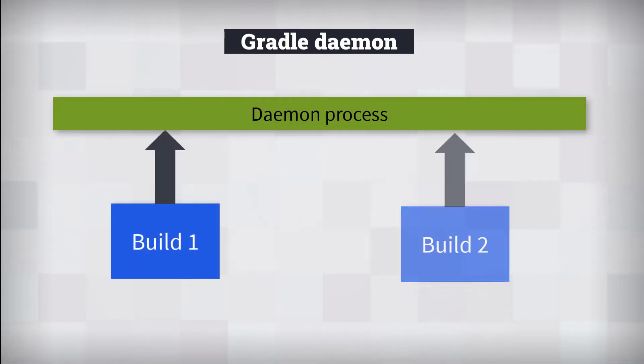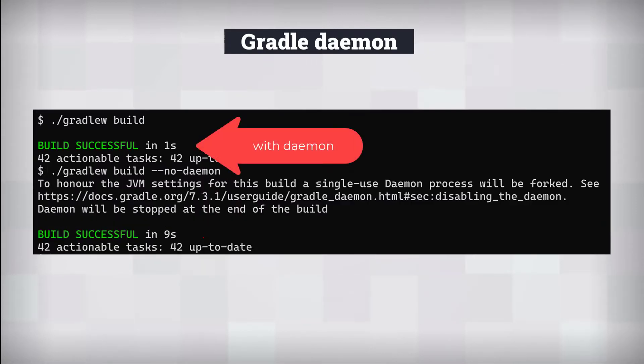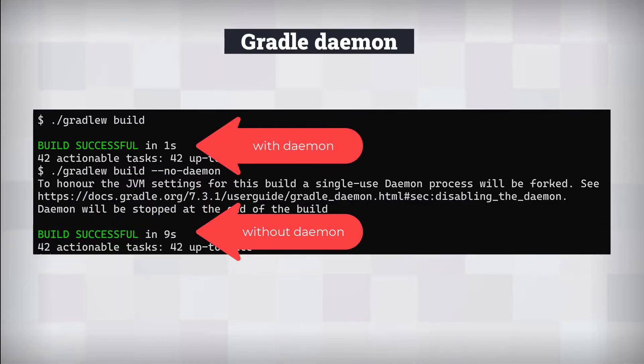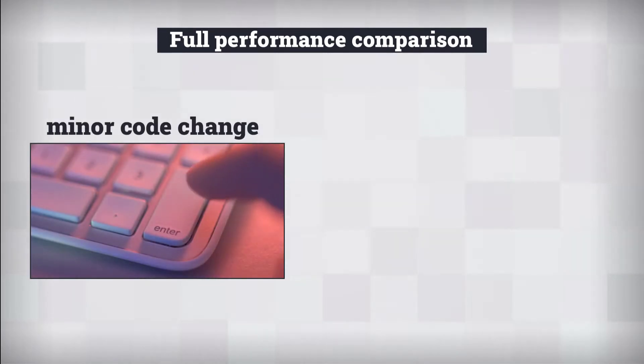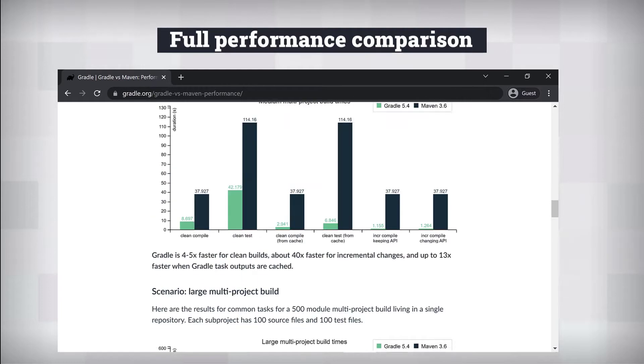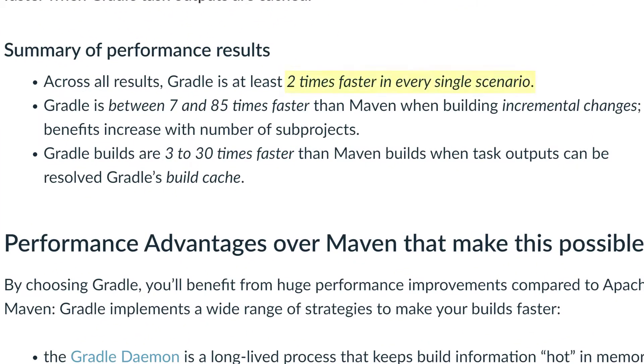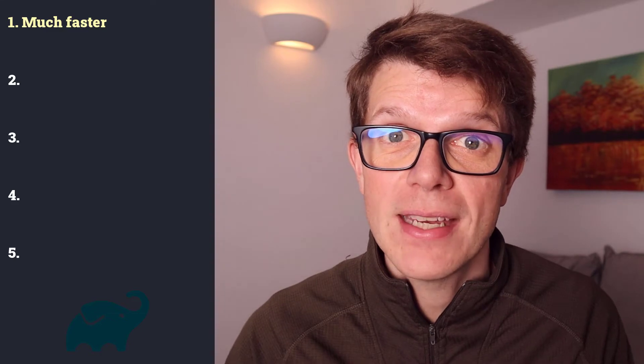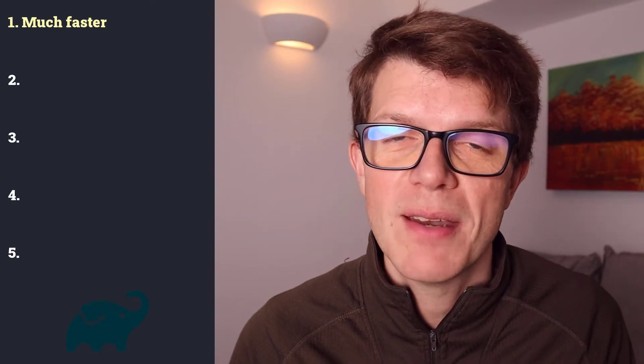There's also the Gradle daemon, which constantly runs Gradle in the background, ready to execute a build. This improves build time by over five seconds — Maven doesn't have such a feature. Gradle have published an article with performance results across multiple scenarios, stating Gradle is at least twice as fast in every scenario, and sometimes up to 85 times faster. Gradle's performance advantages mean less time waiting for your build and more time doing important work.